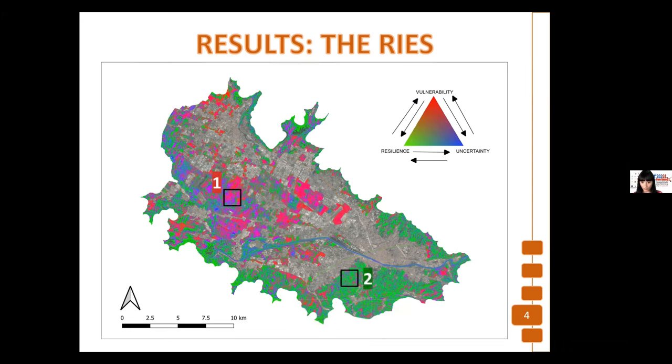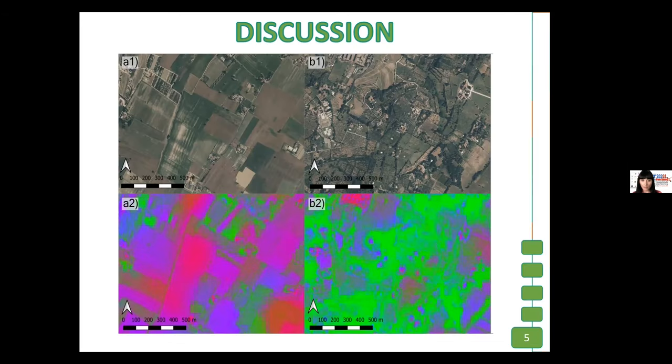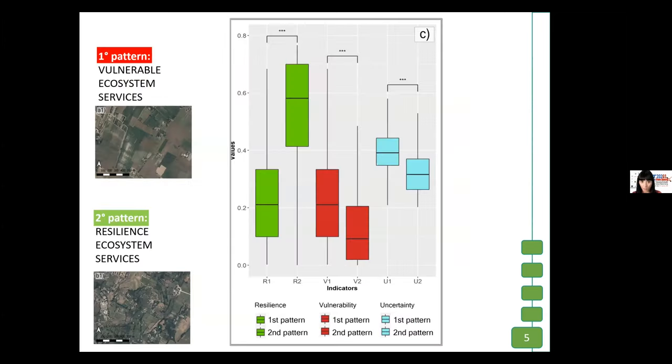To better understand, we have chosen two different types of spatial configurations. In the first pattern, we can see that the ecosystem services are more vulnerable, and the main land use is intensive crops. Meanwhile, the second is more resilient, and it is characterized by olive groves and a lot of tree vegetation. In this box, we can have the comparison between our different types of spatial configuration, and the results confirm our hypothesis.